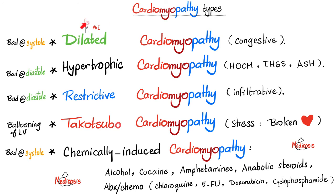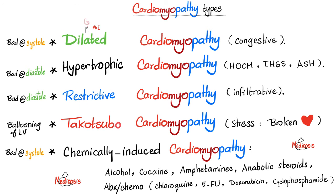Recall: dilated cardiomyopathy — I'm very good at diastole but I'm bad at systole. Hypertrophic is the opposite — I am good at systole because the muscle is so thick, but I'm bad at diastole. Restrictive — I am restricted from filling, which means I'm bad at diastole. And if there is less input, there will be less output.